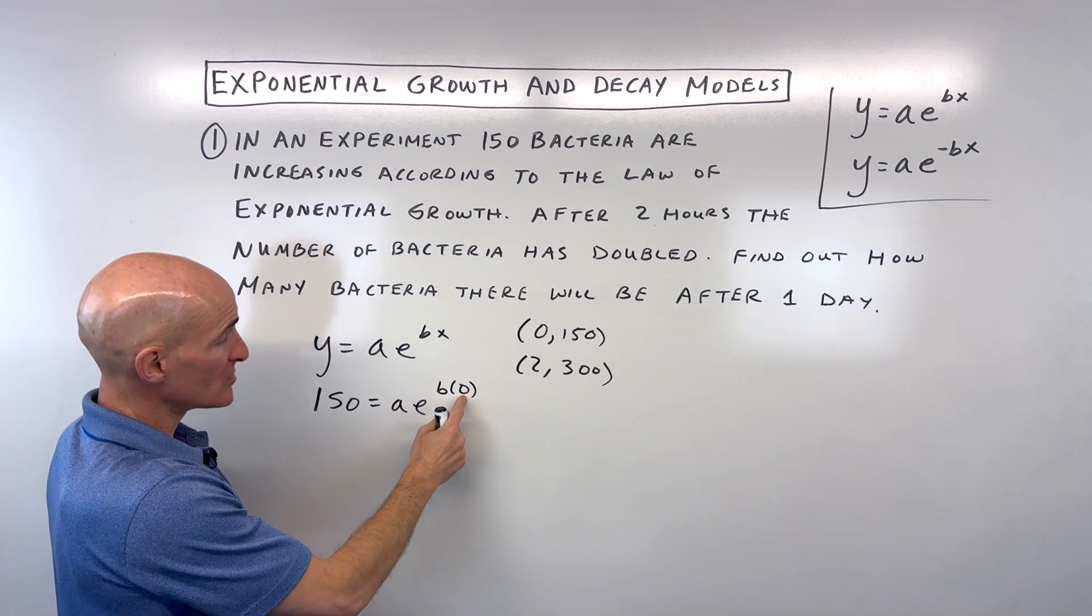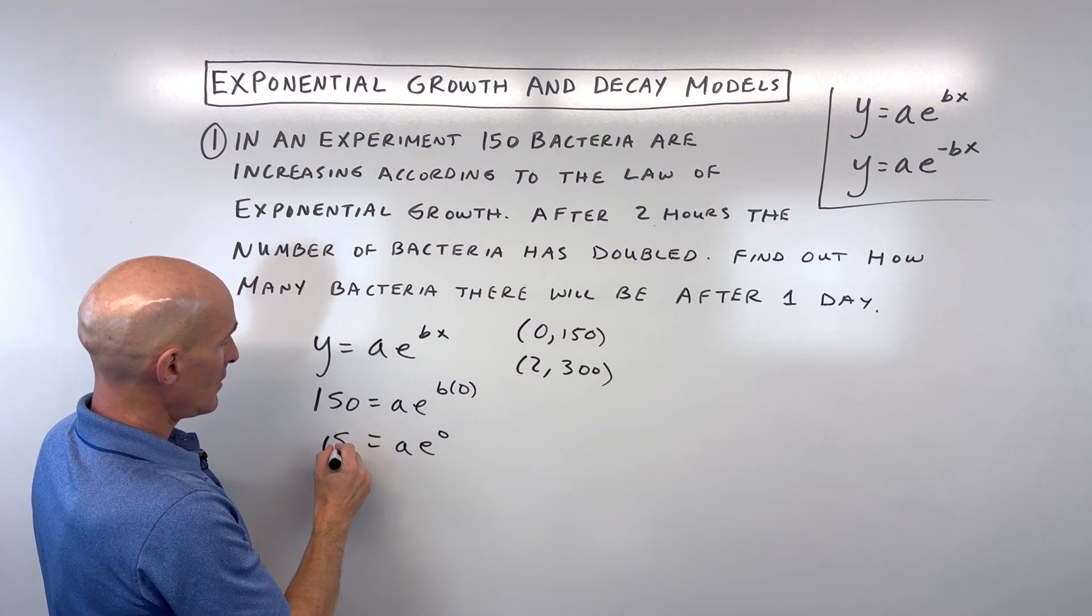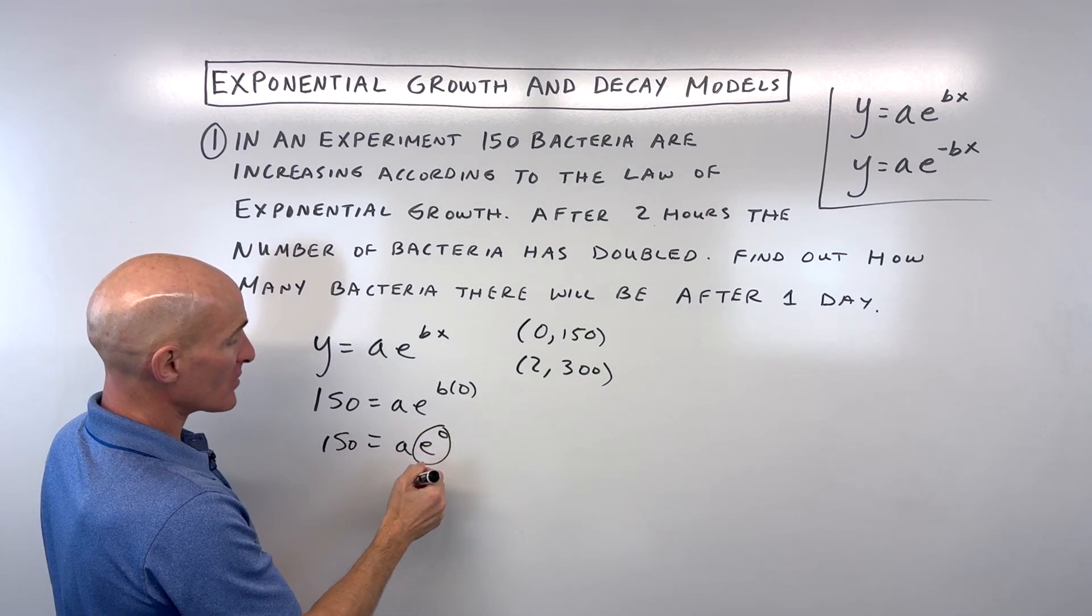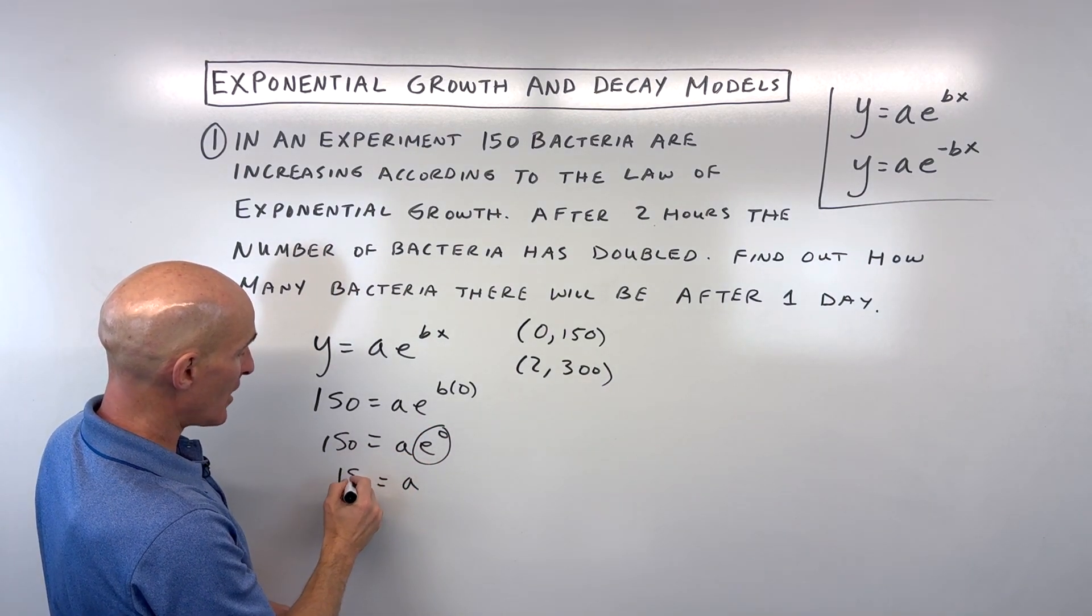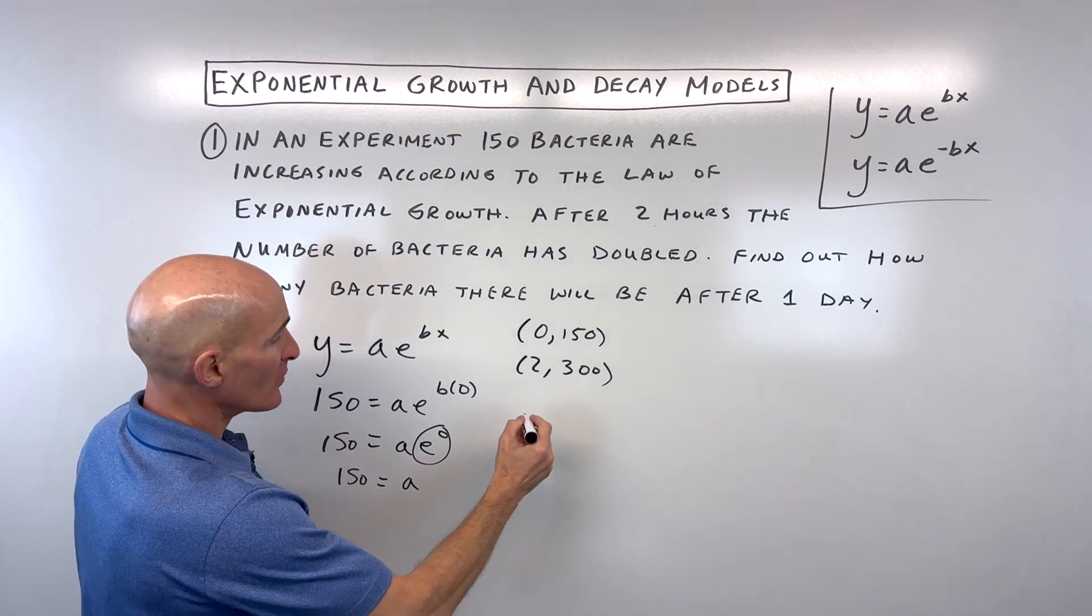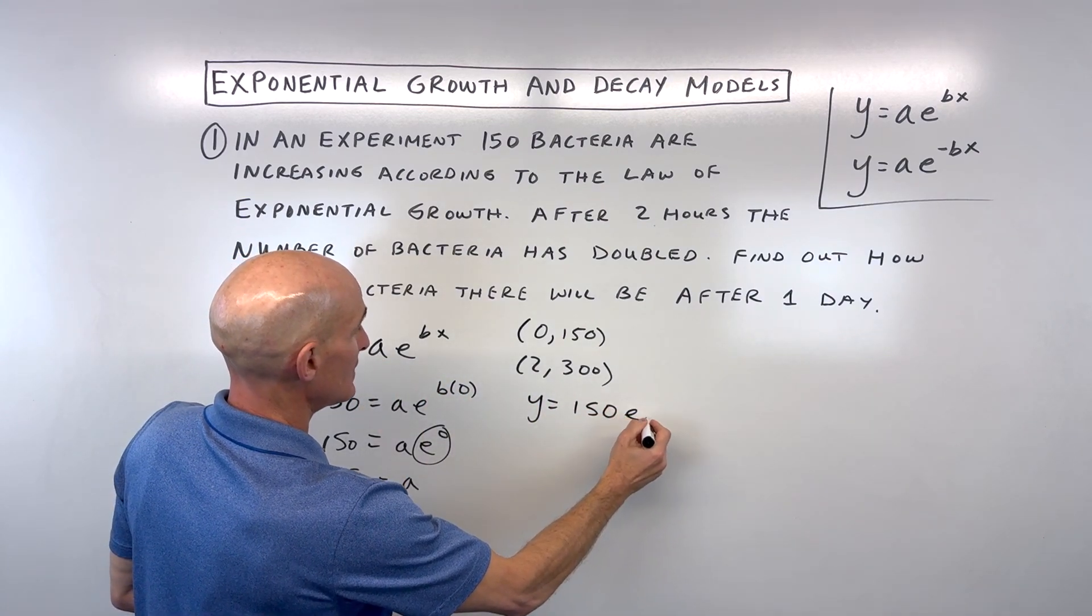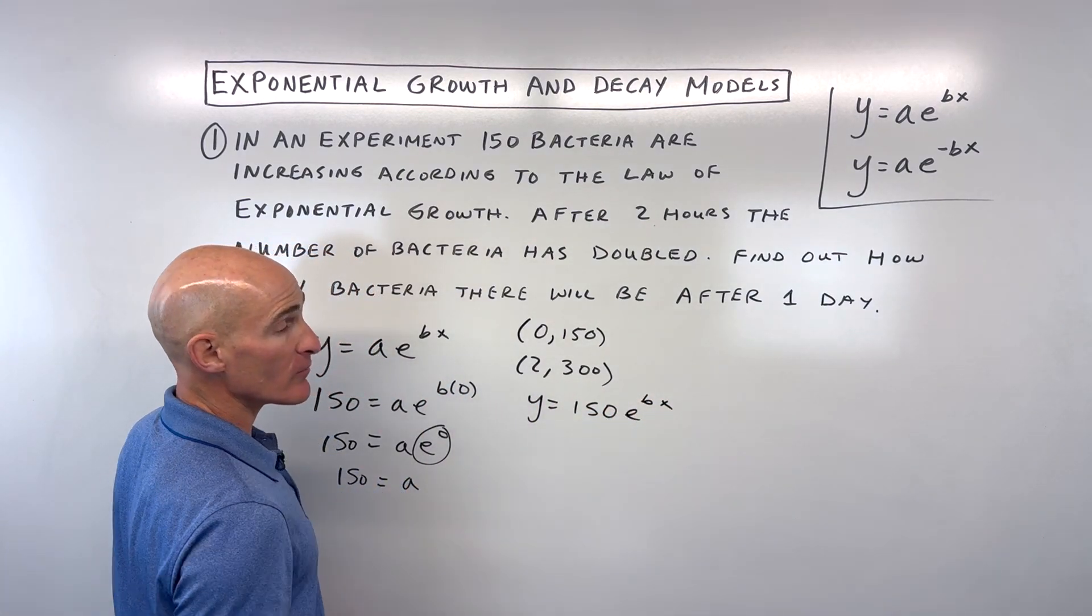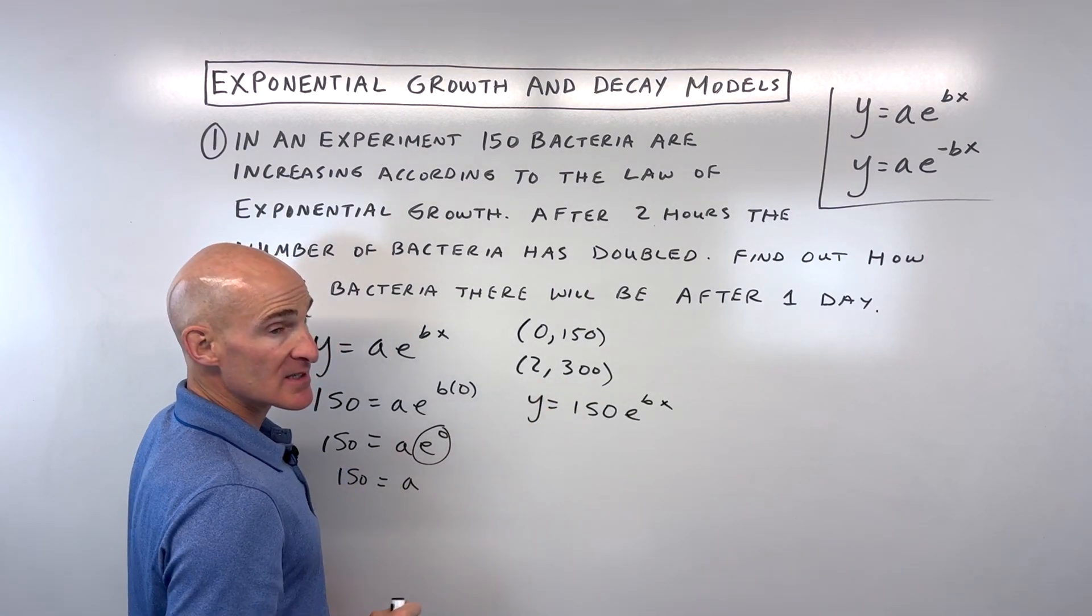We know b times zero is zero, and anything to the zero power equals one, and one times a is a. So a equals 150 - that's our starting amount or initial amount. Now we have y equals 150e to the bx. We still don't know what b is, right?